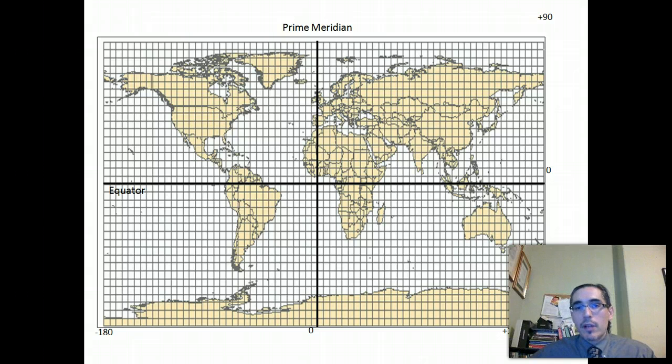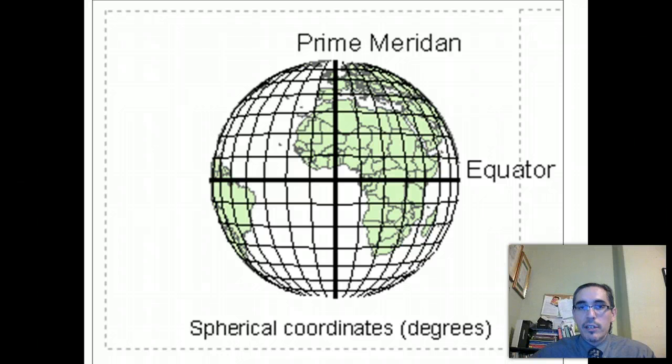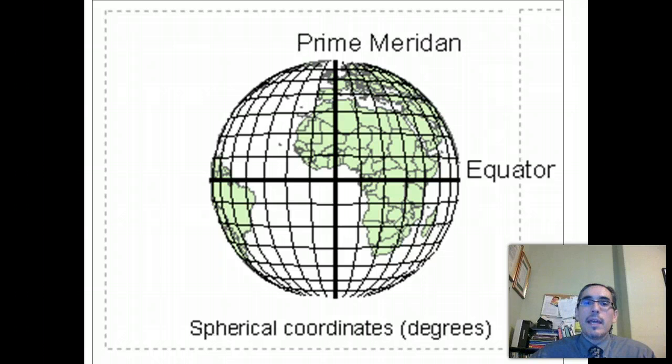The thing, though, that makes it more complicated is that the Earth is not flat or two-dimensional like the Cartesian coordinate grid, but rather roundish. And so that roundishness, the curvature, rather, of the Earth,